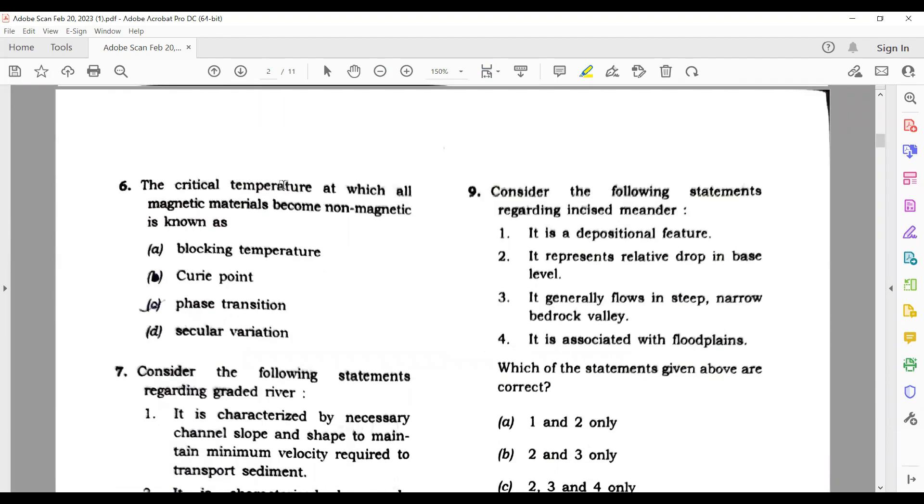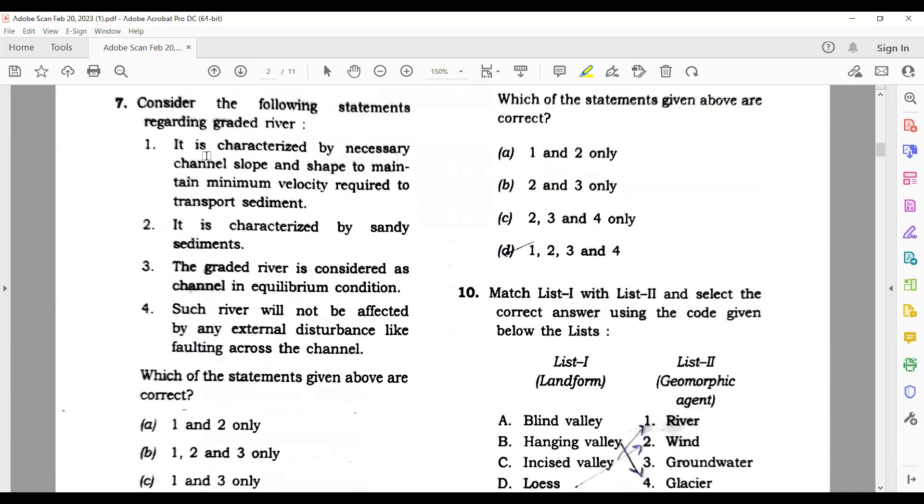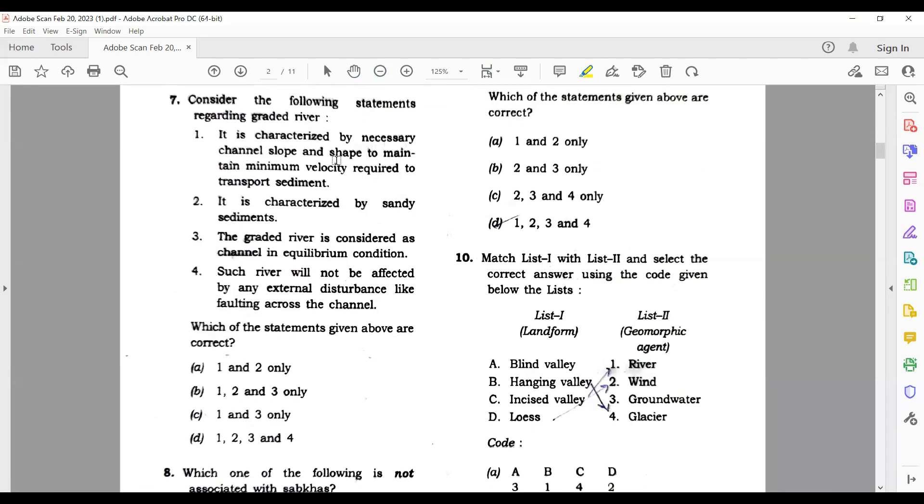The critical temperature at which all magnetic materials become non-magnetic is Curie point. Consider the following statement - it is characterized by necessary channel slope and shape to maintain velocity required to transfer. I am not sure about this answer.